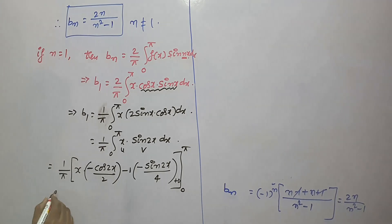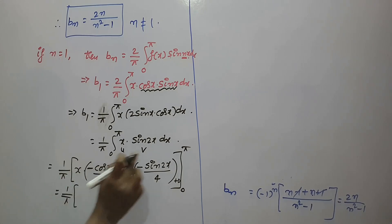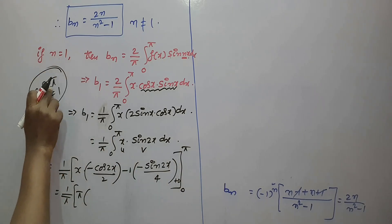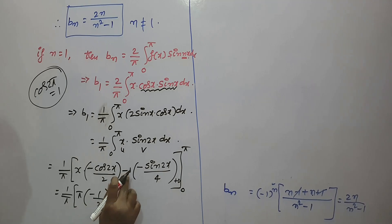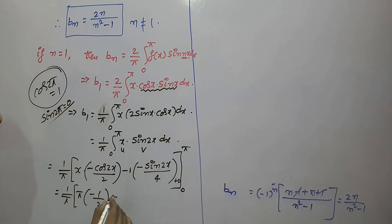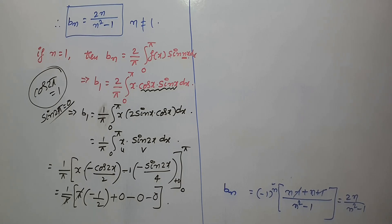Applying the upper limit x = π: π·(−cos(2π)/2) − (−sin(2π)/4). Now cos(2π) = 1 and sin(2π) = 0, so we get −π/2 − 0 = −π/2. Applying the lower limit x = 0: 0·cos(0) = 0 and sin(0) = 0. So b₁ = (1/π)·(−π/2) = −1/2.